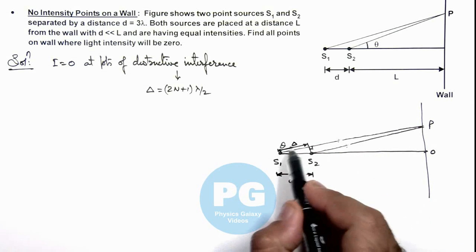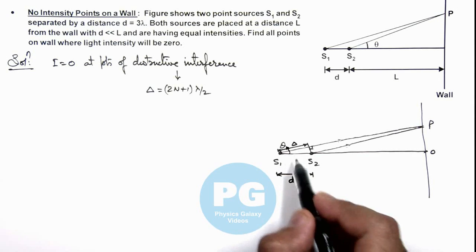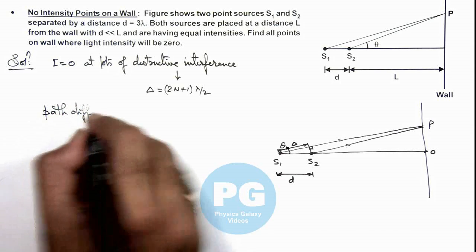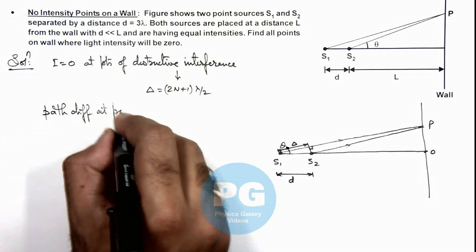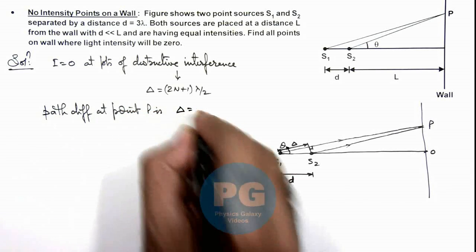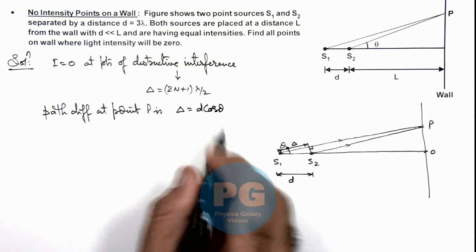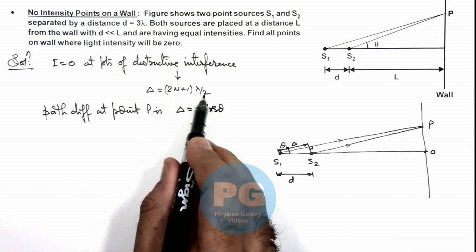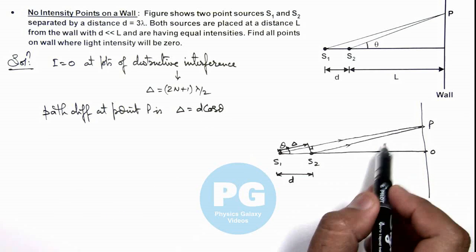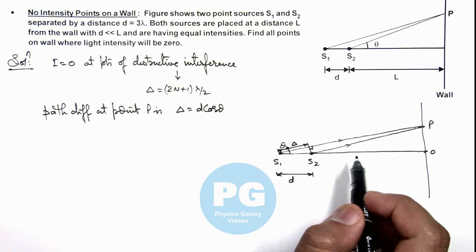In this situation, if this angle is theta, we can write the value of path difference at point P as d cos θ. When this path difference is an odd multiple of λ/2 at point P, destructive interference takes place and the intensity of light at point P will be zero.